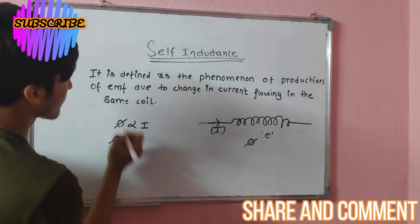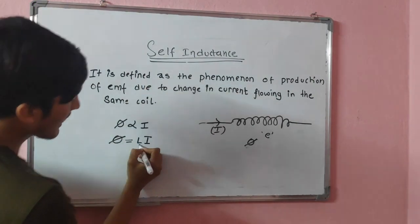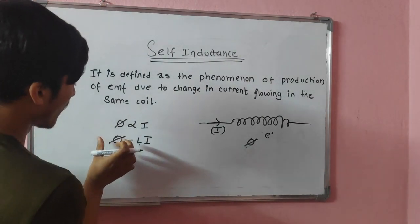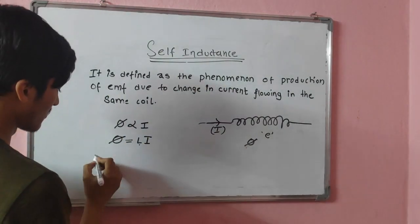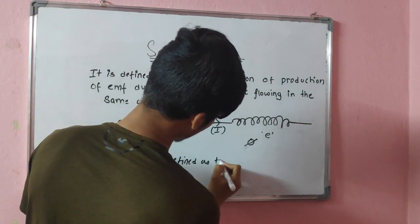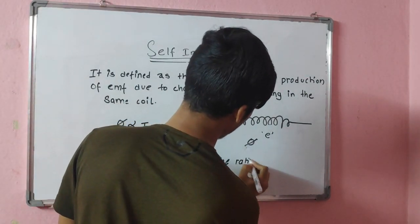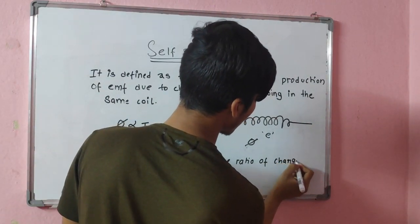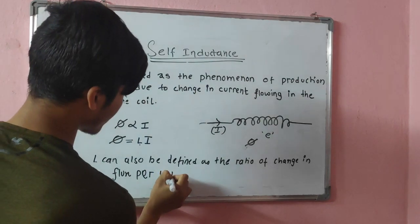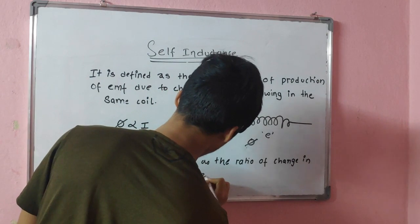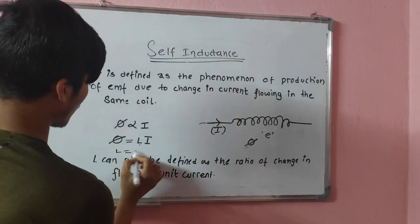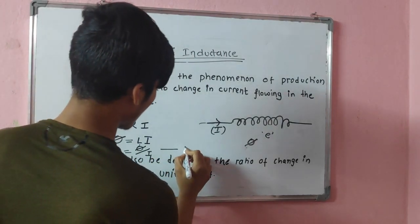From this relation we can derive an expression: φ = LI, where L is the proportionality constant called self-inductance. So self-inductance can also be defined as the ratio of flux to current. L is defined as the ratio of flux per unit current: L = φ / I. Let this be equation number one. Now we will deal with the case of a solenoid.